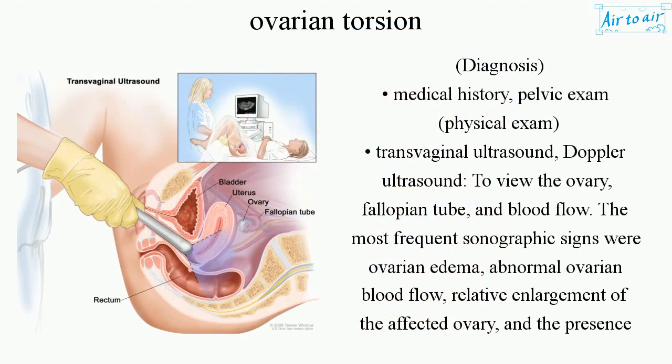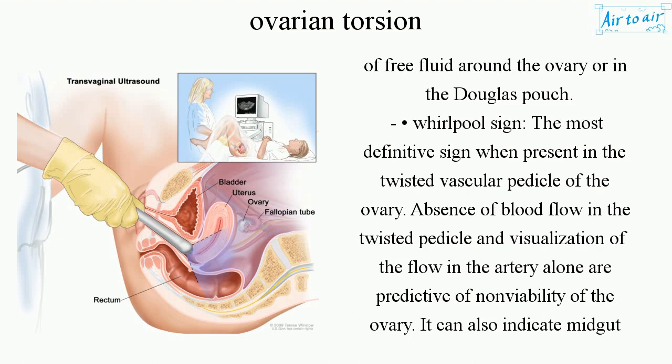Diagnosis includes medical history, pelvic exam, physical exam, transvaginal ultrasound, and Doppler ultrasound to view the ovary, fallopian tube, and blood flow. The most frequent sonographic signs were ovarian edema, abnormal ovarian blood flow, relative enlargement of the affected ovary, and the presence of free fluid around the ovary or in the Douglas pouch.